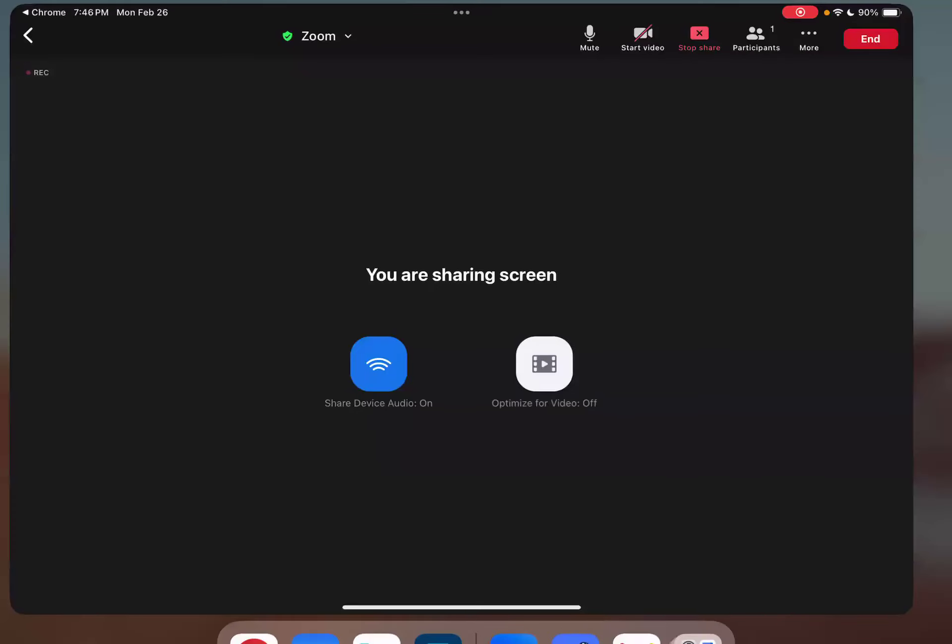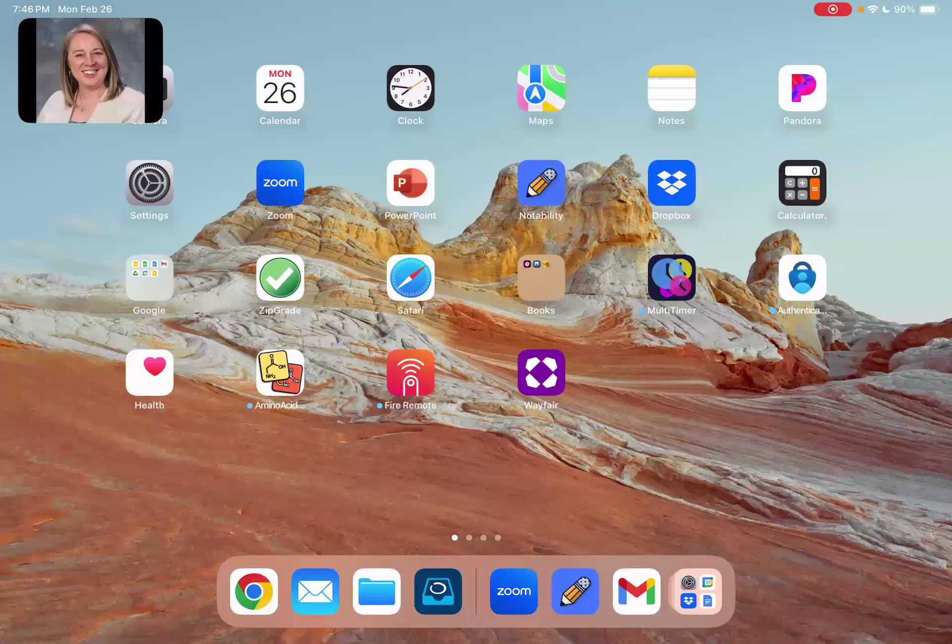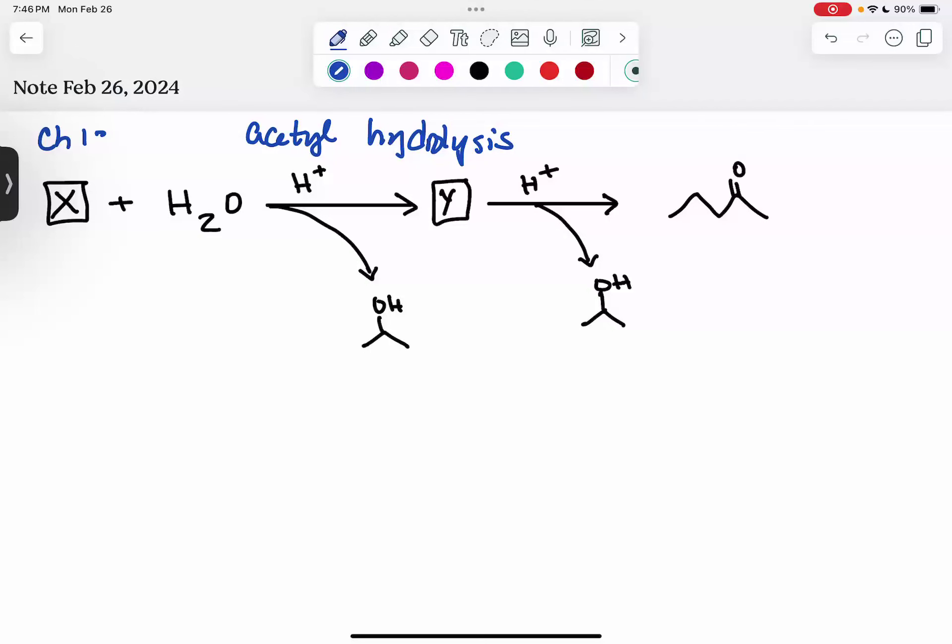This is Chapter 13 homework. The problem asks you to determine the structure of the missing organic molecules in the following reactions. You need to draw the missing organic molecules, X and Y, in skeletal line structure.